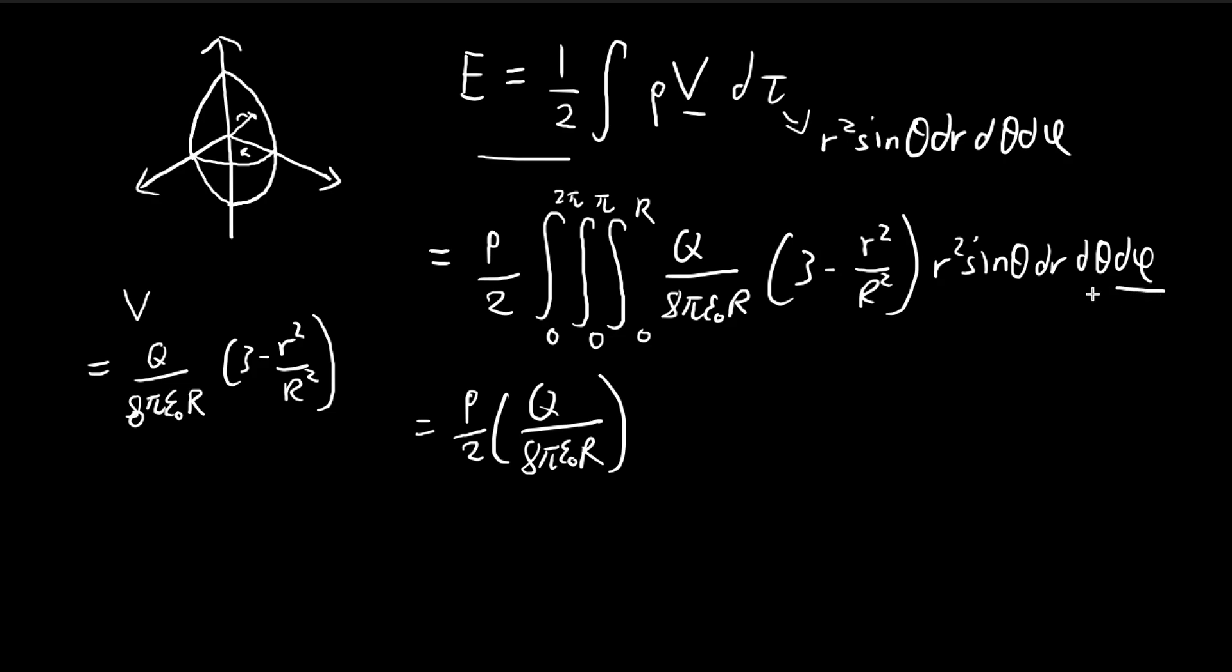For the φ term, you see there are no φ terms inside, so I can just integrate the φ term first. And then there's only one θ term, so I can integrate sin θ from 0 to π, which equals 2.